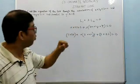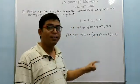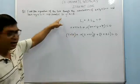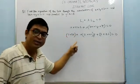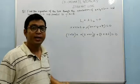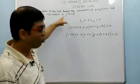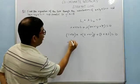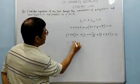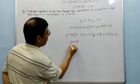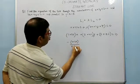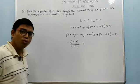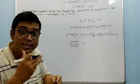In standard form ax plus by plus c equal to zero, we now find the value of lambda. It is given that the required line is parallel to the given line, which means the slope of this line is equal to the slope of that line. The slope of this line is minus the coefficient of x, which is (1 plus 3 lambda), divided by the coefficient of y, which is (2 plus 4 lambda).